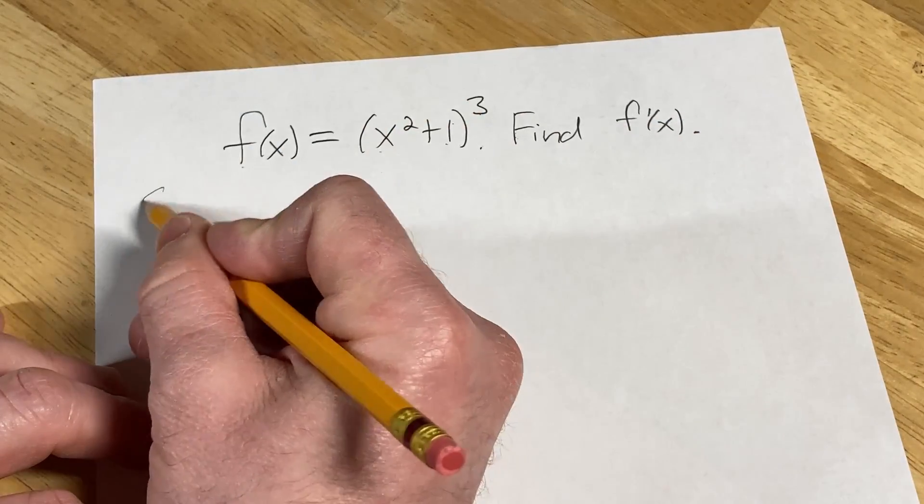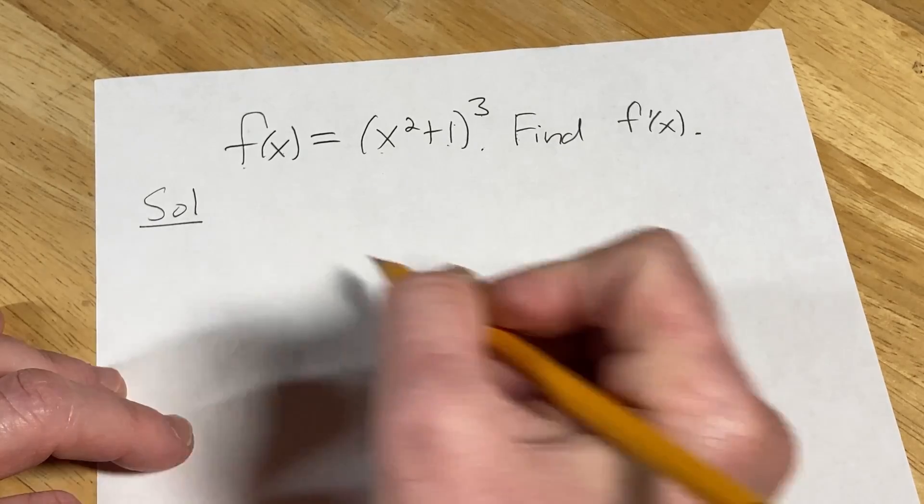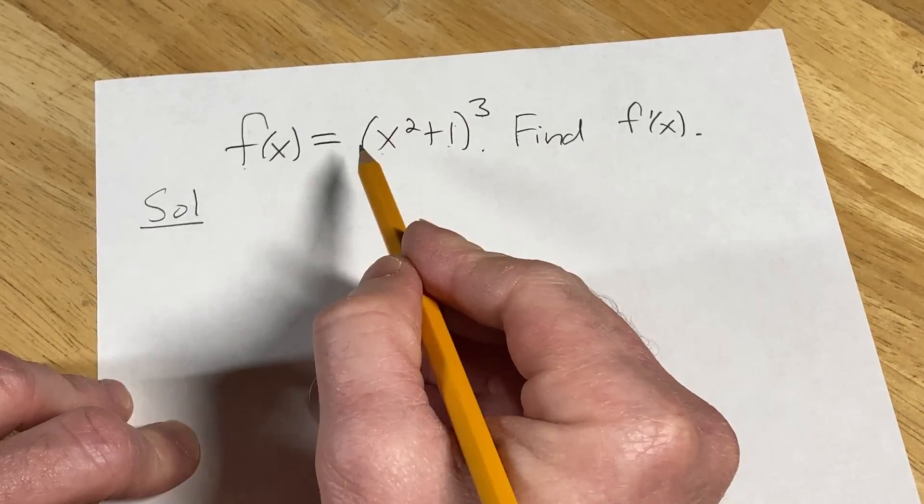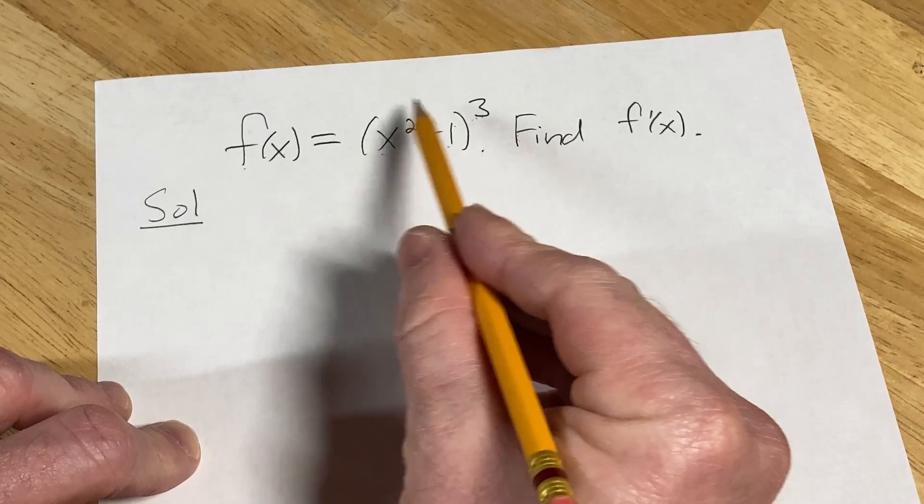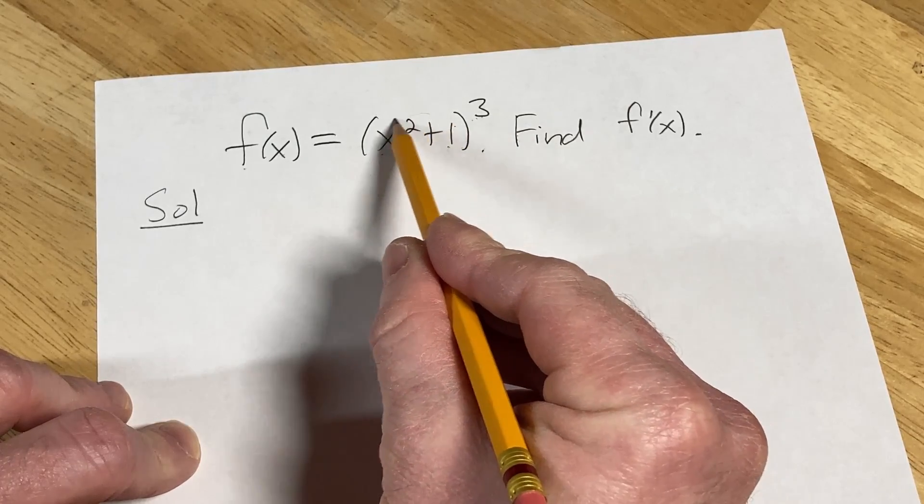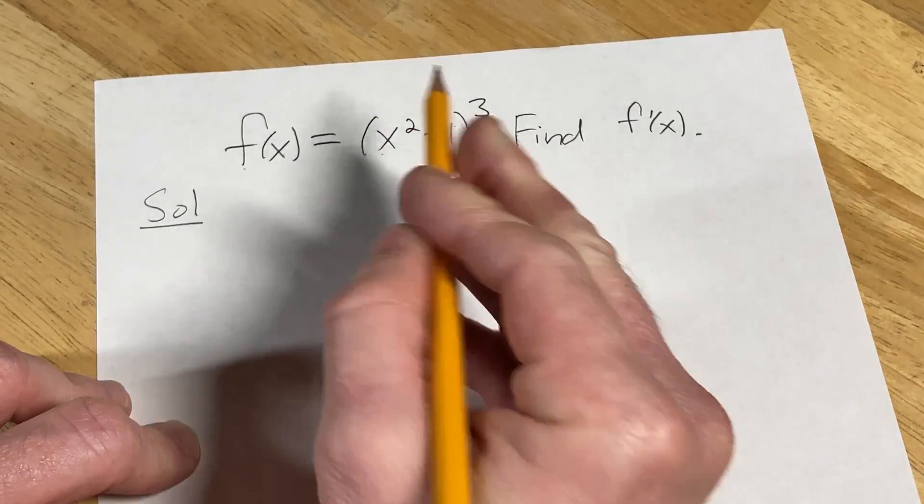To do this problem, we're going to use something called the chain rule. The chain rule says that when you're evaluating a derivative like this, you take the derivative of the outside, leave the inside untouched, and then multiply by the derivative of the inside.